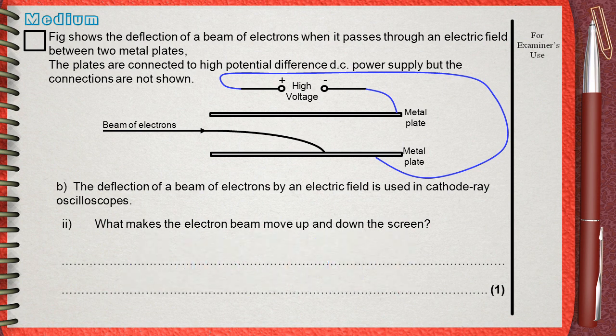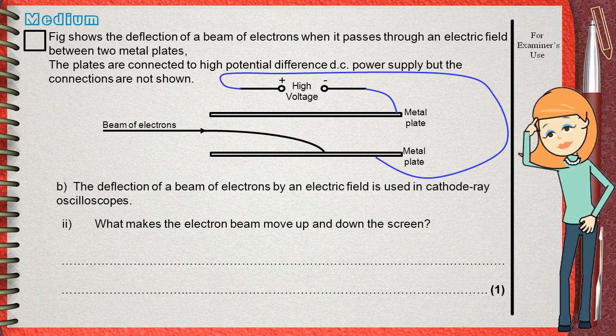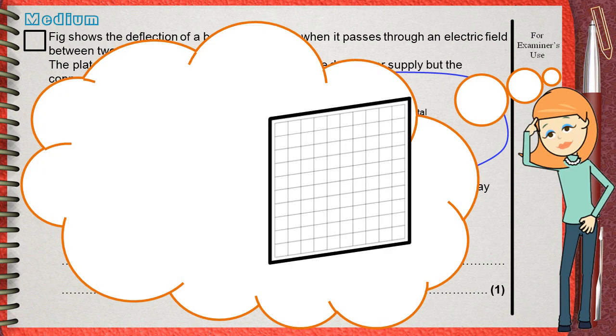This question looks like the previous one, but of course with a different answer. Again, we need to know how to think about the inside of the cathode ray oscilloscope.